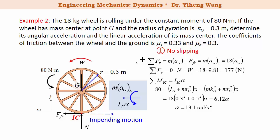Now, if you recall, we discussed an example before of a rolling wheel. When slipping does not occur, we drew the conclusion that the linear acceleration of its mass center simply equals to alpha times r, the radius of this wheel. Therefore, since we are assuming no slipping in this situation, we can apply this equation directly and calculate the linear acceleration of the mass center to be 6.54 meters per second squared. From here, we can solve for the frictional force as well, which is 118 newton from the first equation.